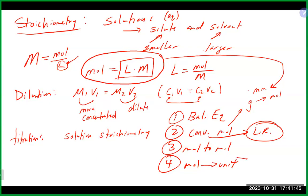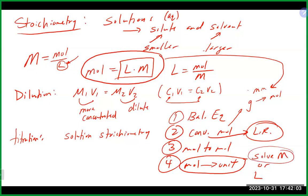The main difference in these problems is how we get to moles. A lot of times we do grams to moles using molar mass. But when using solutions, we use liters times molarity to get moles. At the end, instead of going from moles back to grams, we often use molarity — either solving for molarity or using molarity and moles to figure out volume.